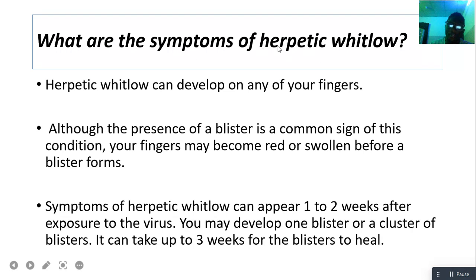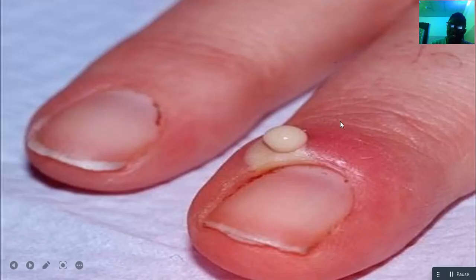What are the symptoms of herpetic whitlow? Herpetic whitlow can develop on any of the fingers. Although the presence of a blister is a common sign, your fingers may become red or swollen before a blister forms. Symptoms can appear one to two weeks after exposure to the virus. You may develop one blister or a cluster of blisters, and it can take up to three weeks for blisters to appear. This diagram shows a blister at the tip of the finger, with the area appearing reddish — indicative of inflammation.